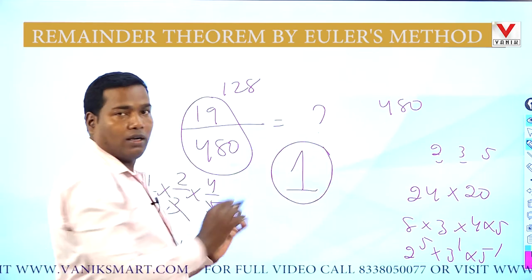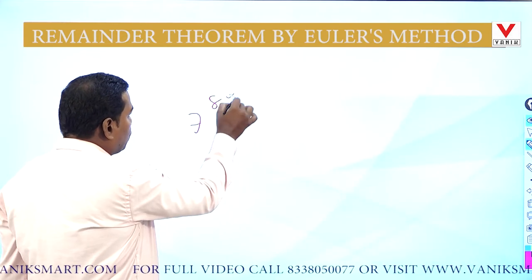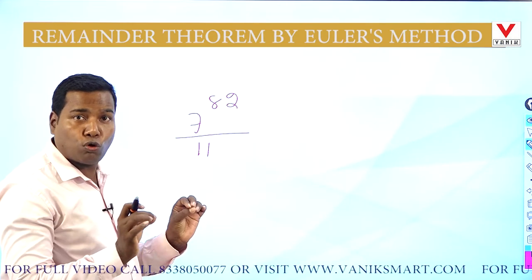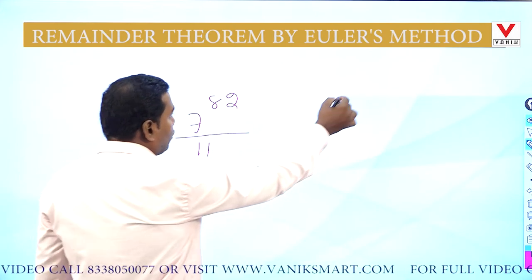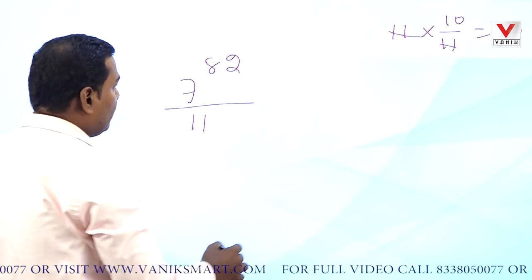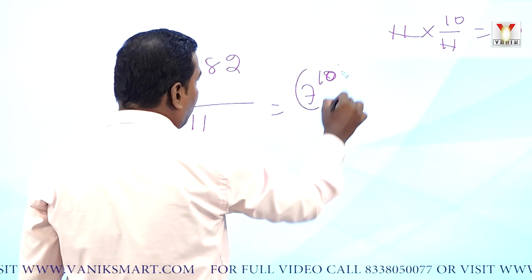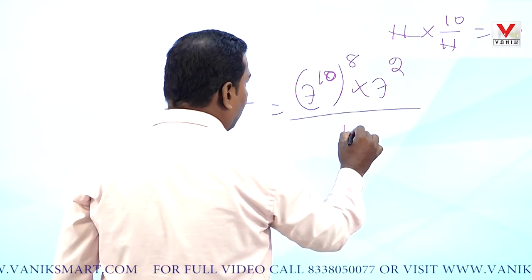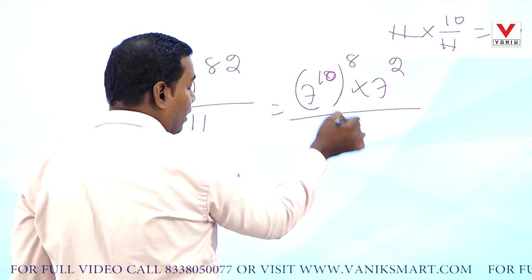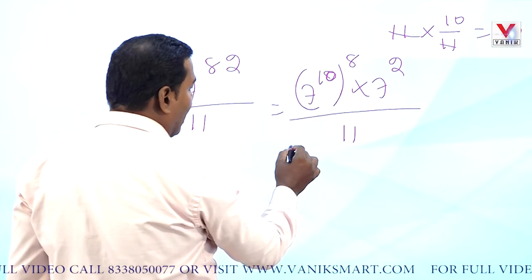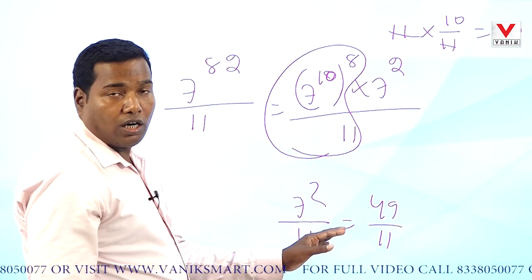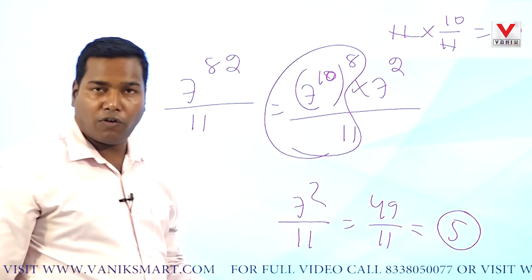Another example: 7⁸² divided by 11 — what is the remainder? Here 7 and 11 are co-prime numbers. The Euler's number of 11 is 11 × (10/11) = 10. So I write 7⁸² as (7¹⁰)⁸ × 7², divided by 11. Since 7¹⁰ divided by 11 gives remainder 1, we then compute 7² = 49 divided by 11. 11 × 4 = 44, so the remainder is 5.